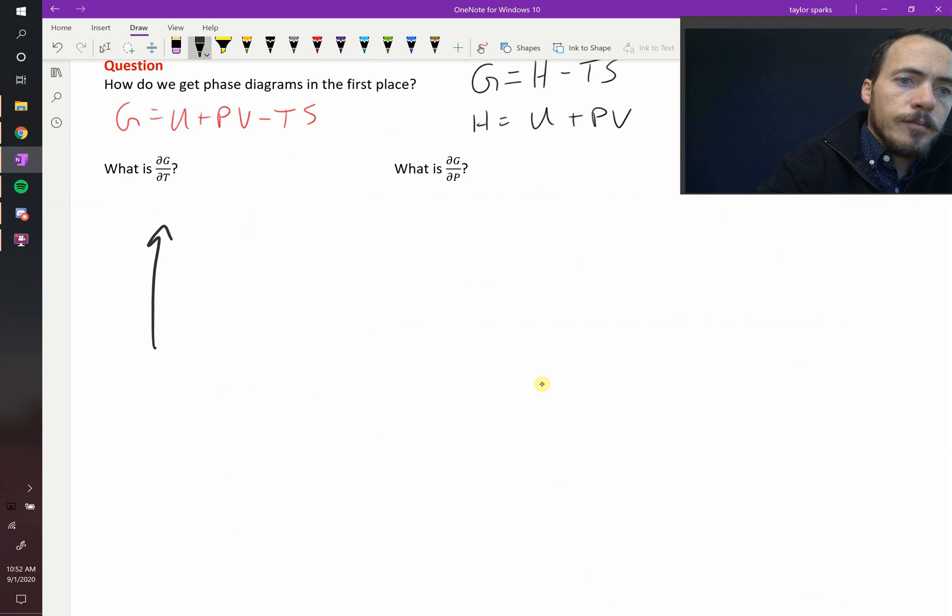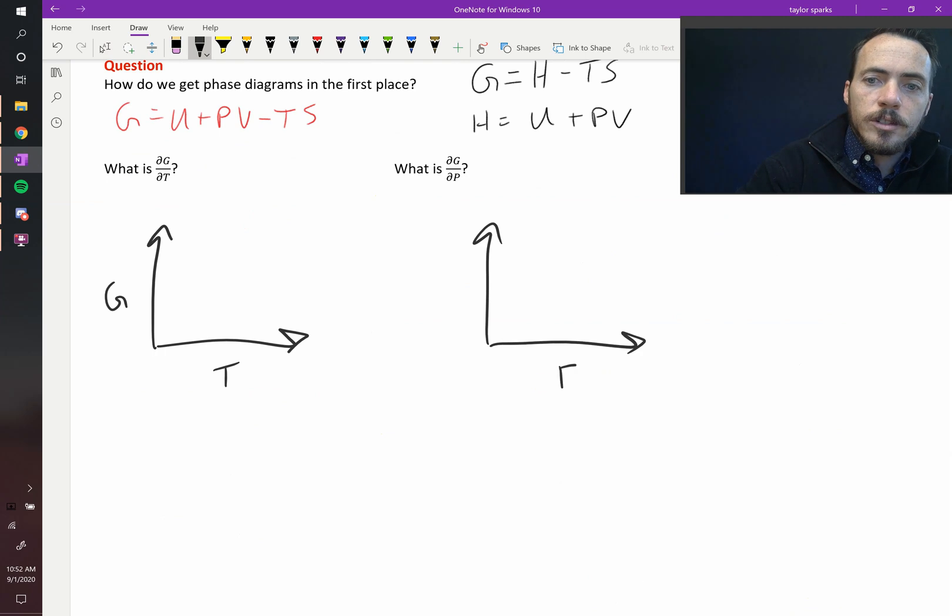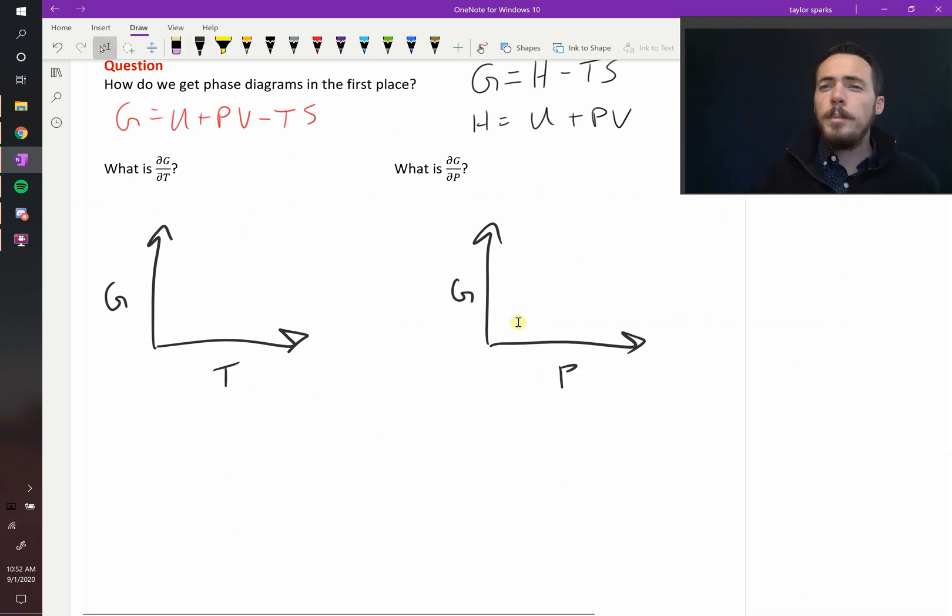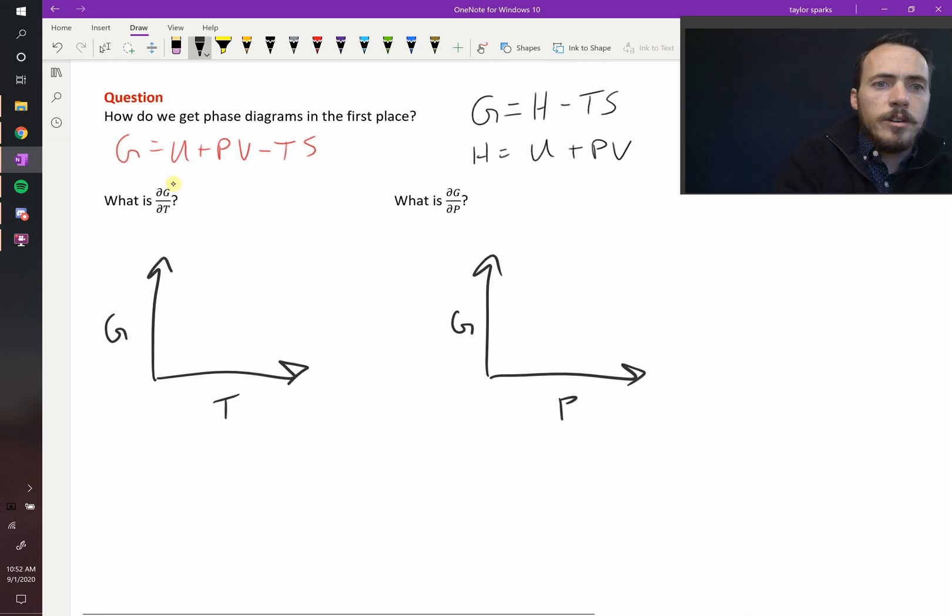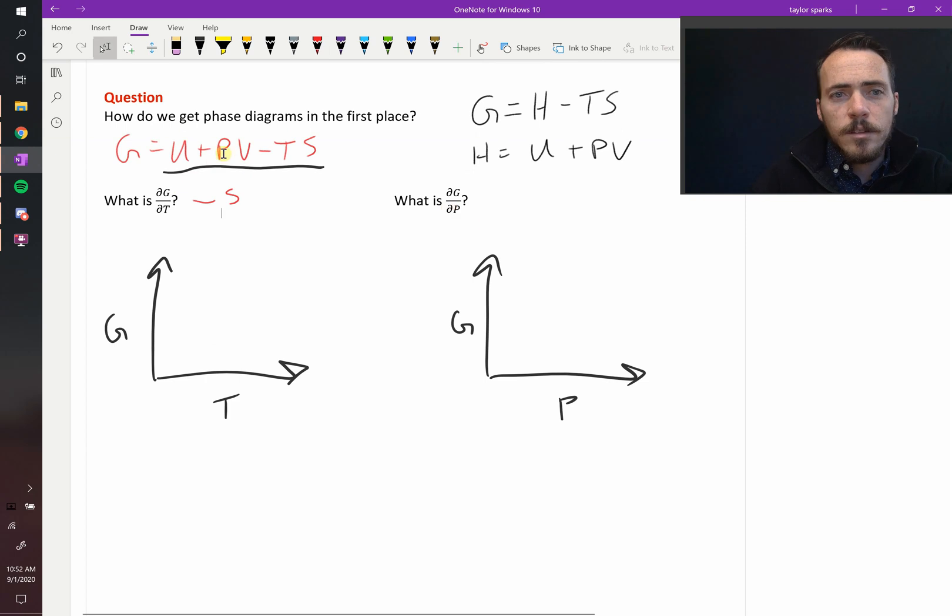We're going to plot free energy versus temperature. Or over here, we're going to plot free energy versus pressure. What should be the slope at any given point of these things? Well, we can figure that out by looking at this expression. If you take the derivative with respect to temperature, what do you get? It's equal to negative S. If you take the derivative with respect to pressure, dG/dP, then the slope should be equal to the positive volume.